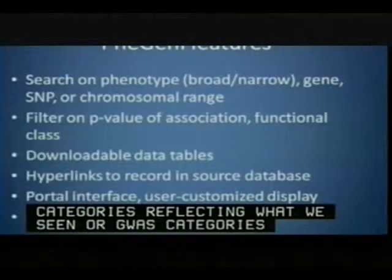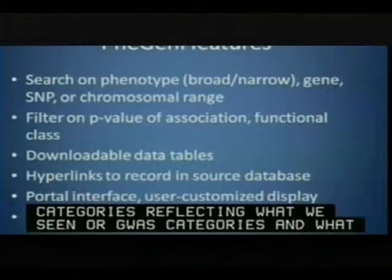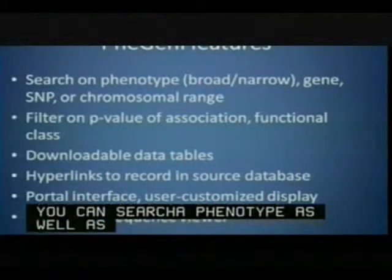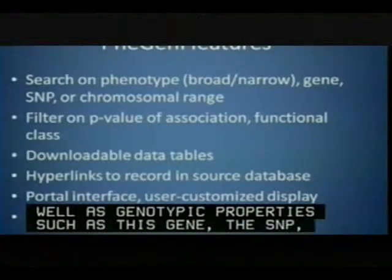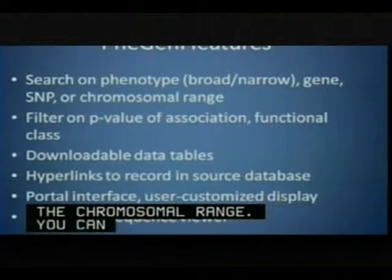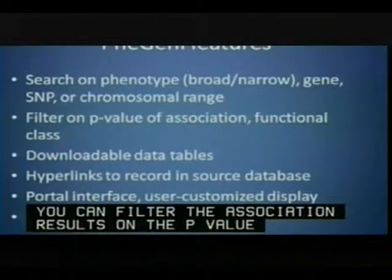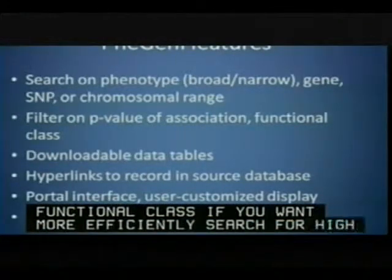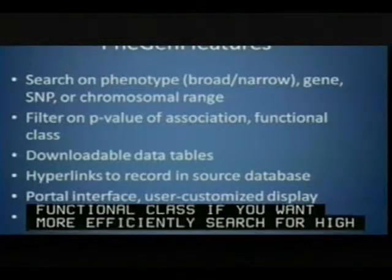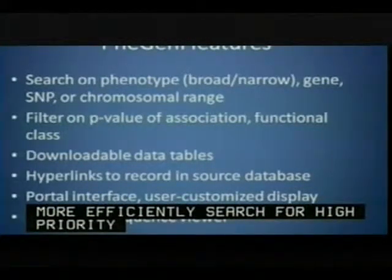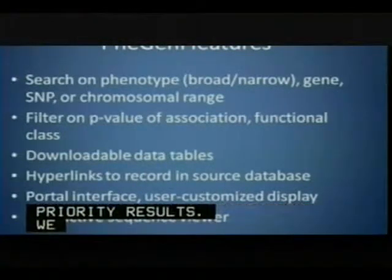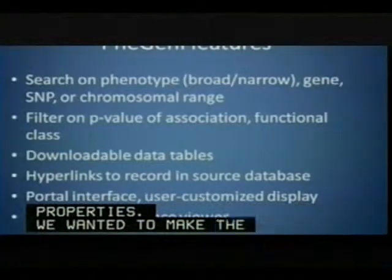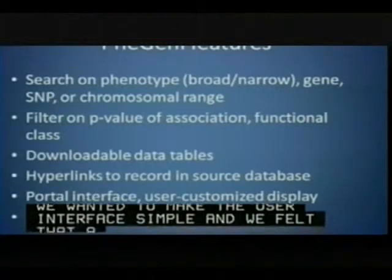For a more detailed look at how PheGenI works: users can search on phenotype using both broad and narrow categories, as well as genotypic properties such as the gene, the SNP, the RS number, or the chromosomal range. Association results can be filtered on the p-value and SNPs on functional class to more efficiently search for high priority results. Data tables are downloadable, and hyperlinks to source databases from NCBI allow users to browse various properties. A portal interface keeps things simple.